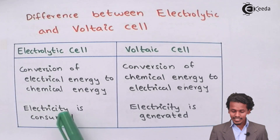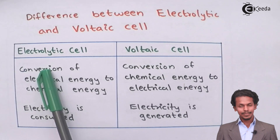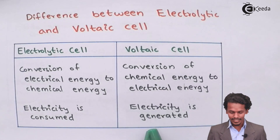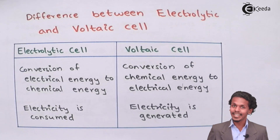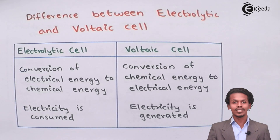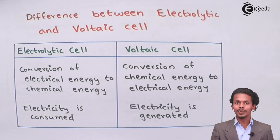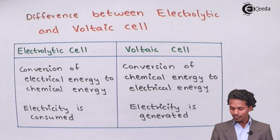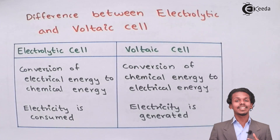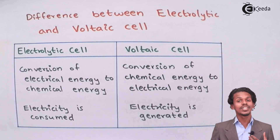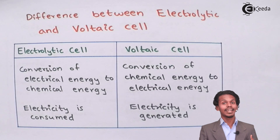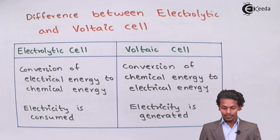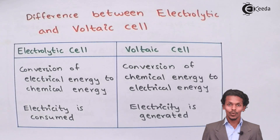The next difference: electricity is consumed in the electrolytic cell, while in the voltaic cell electricity is generated. In the electrolytic cell, we have to provide electricity and it is consumed by the reactant species. But in the voltaic cell, the reactant species react with each other to generate electricity.